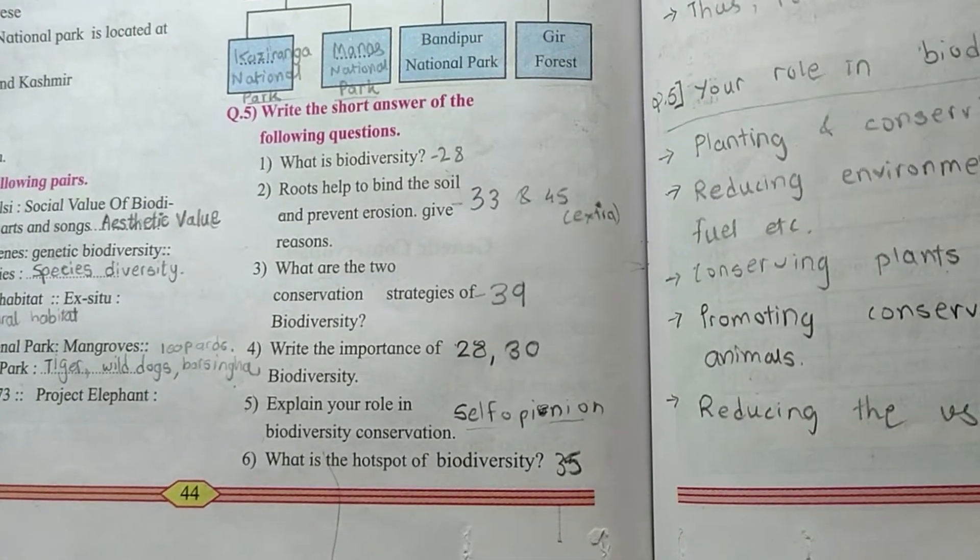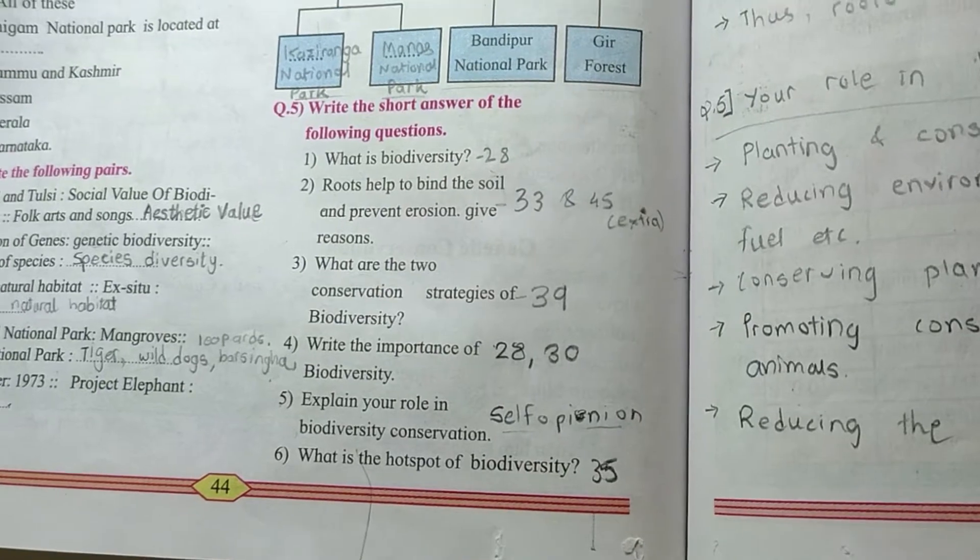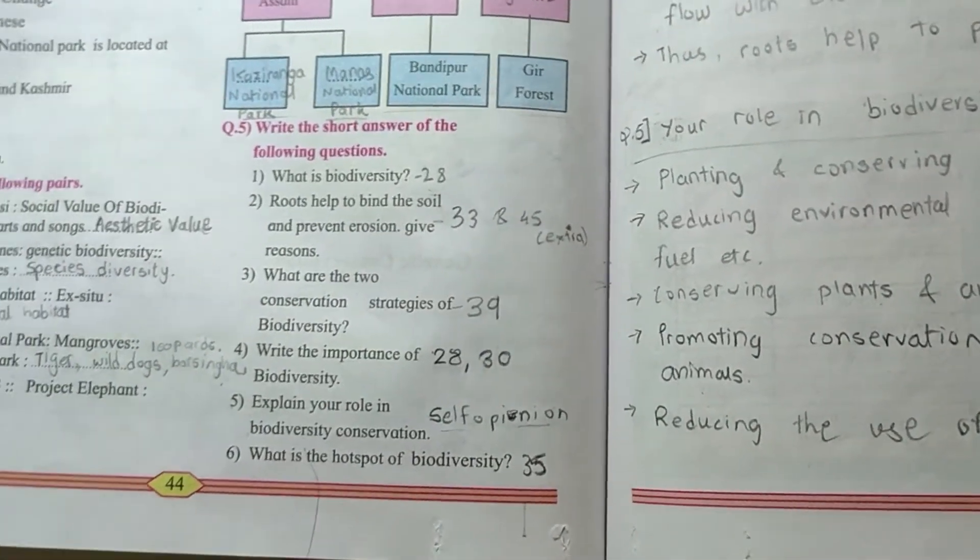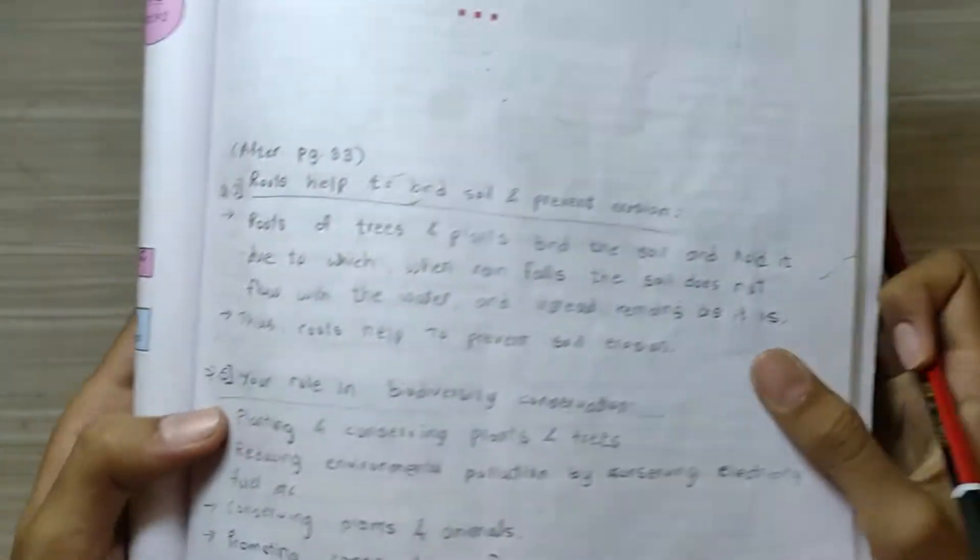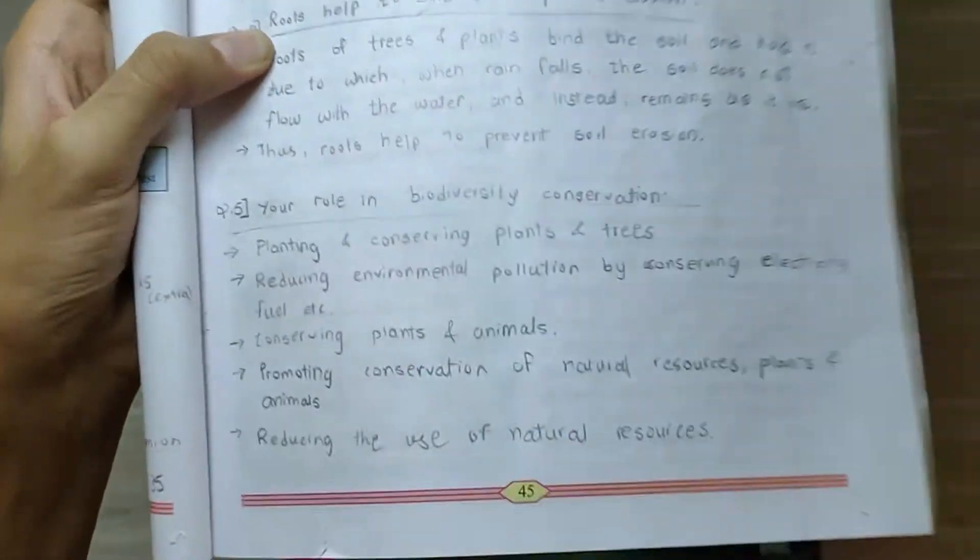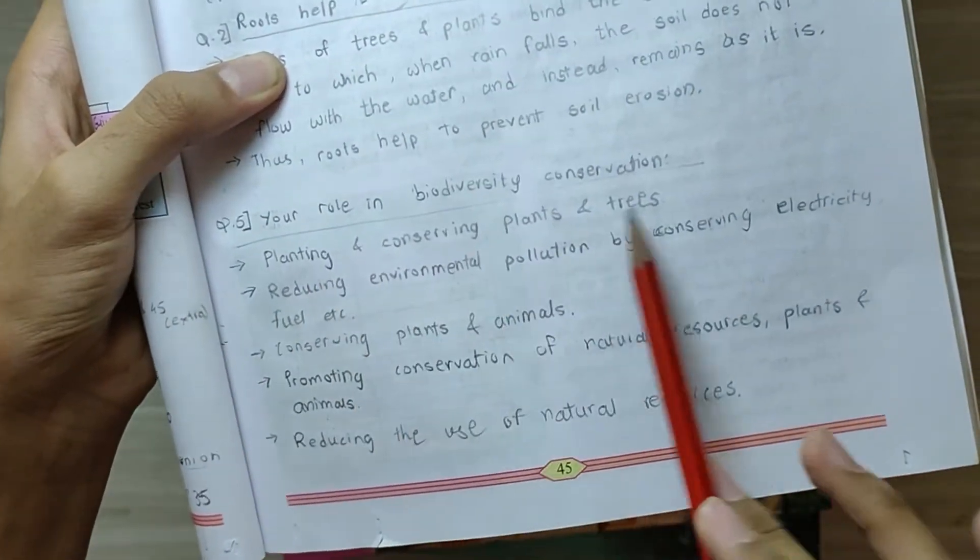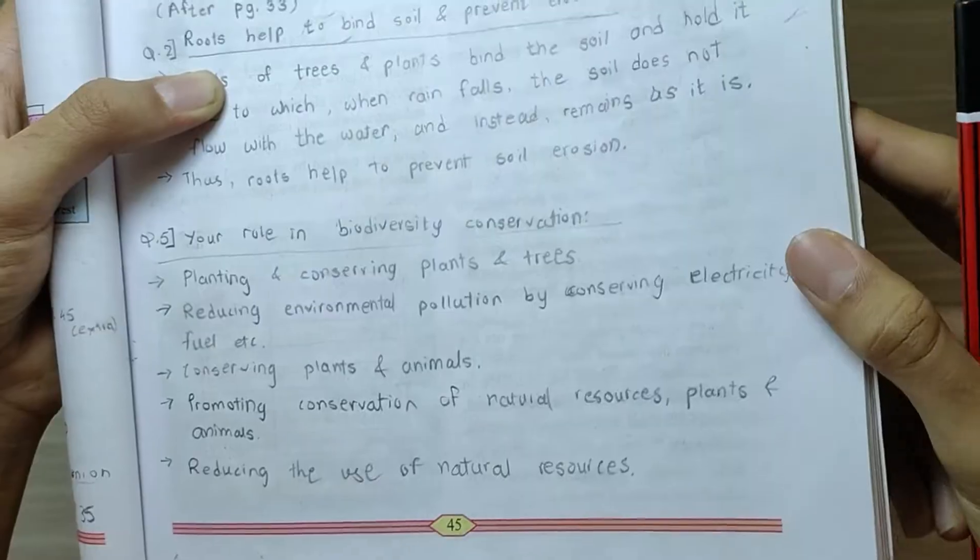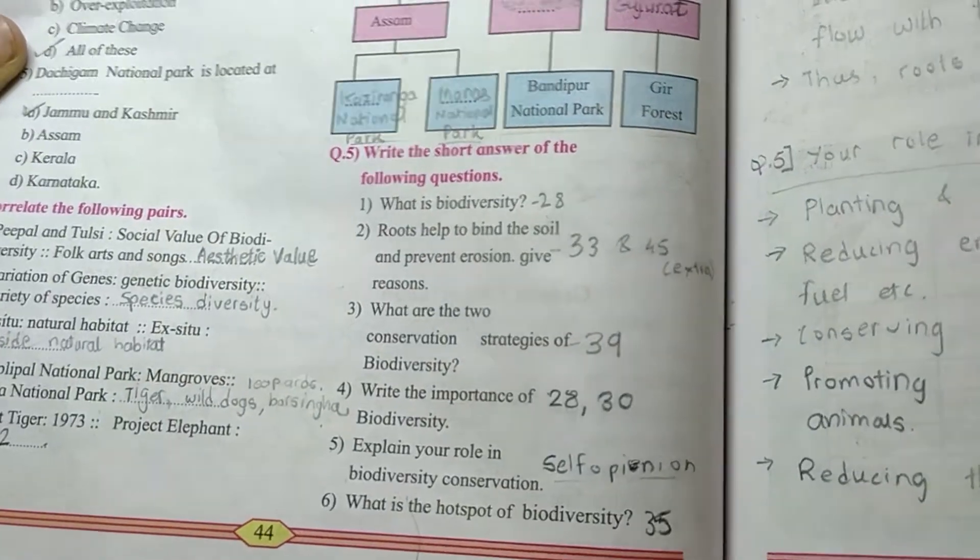Question number 5, explain your role in biodiversity conservation. It is also a self-opinion, this answer is not given in the textbook. I have written some points on my own. You can write these points in your own words, planting and conserving in sanctuaries, reducing environmental pollution, these are some points.